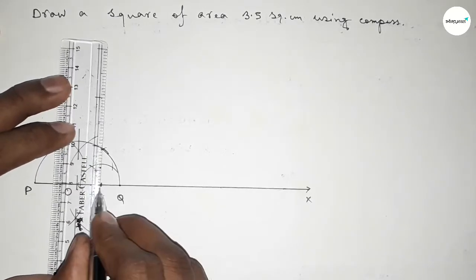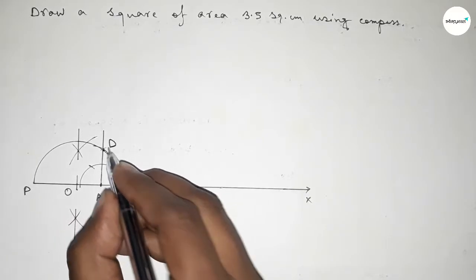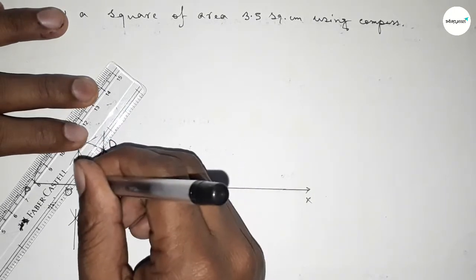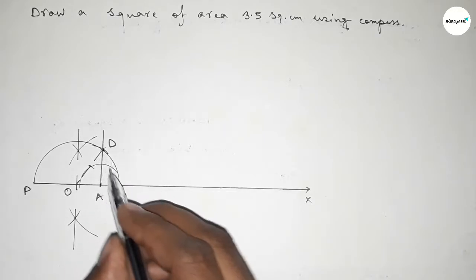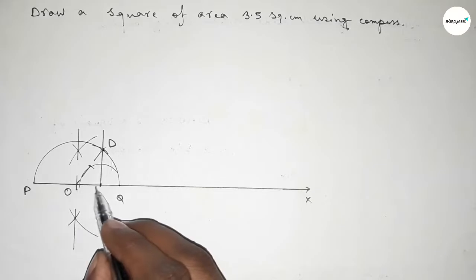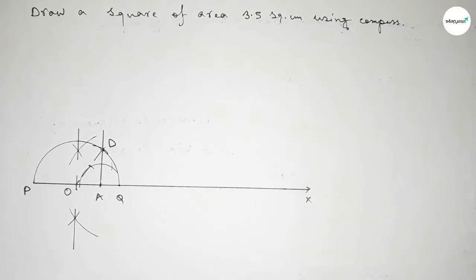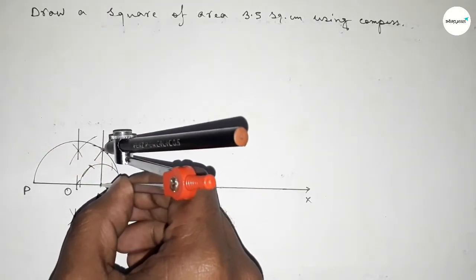Joining this side, which meets the semicircle at point D. Now joining O and D, which is the radius of the semicircle. From the right-angle triangle OAD, OD is the hypotenuse, OA is the base, and AD is the height, so the value of AD equals root 3.5 centimeters. If you don't know how to derive this, please watch the related video on the channel.